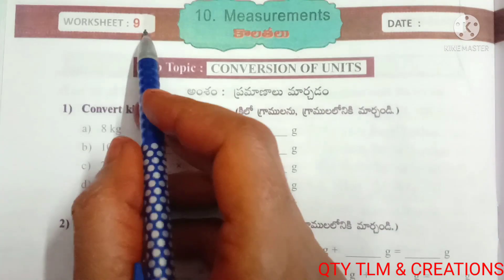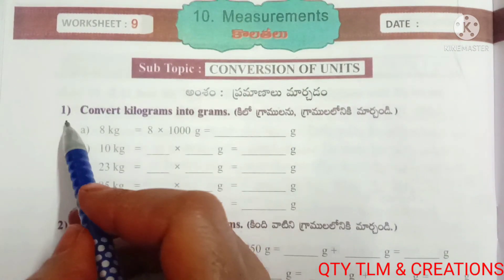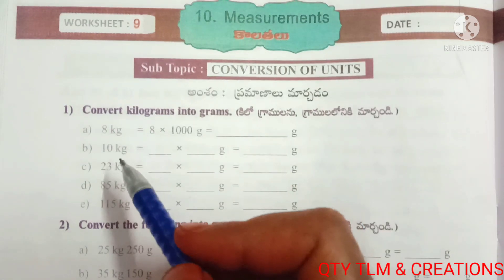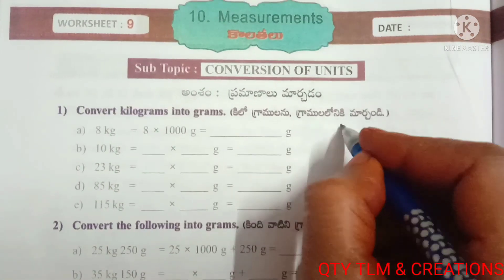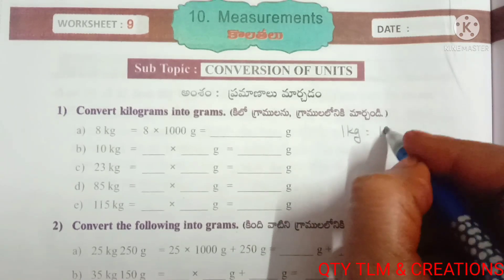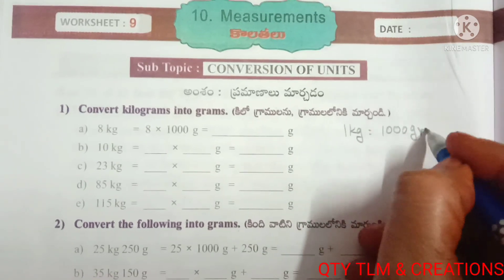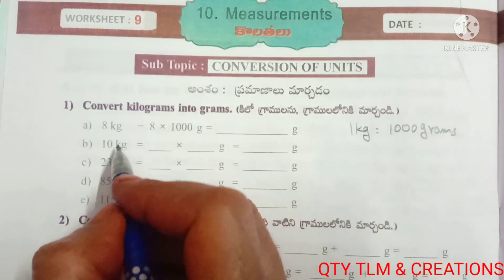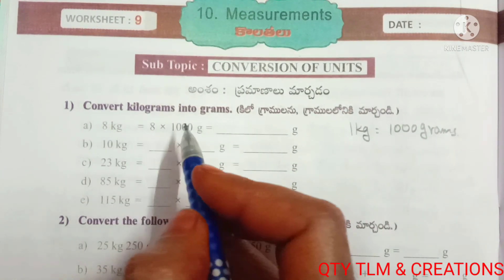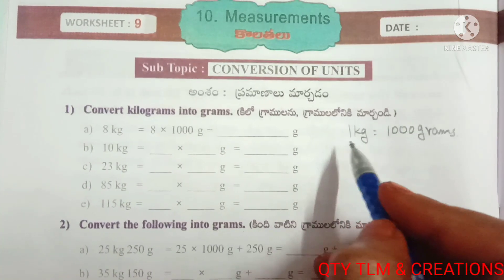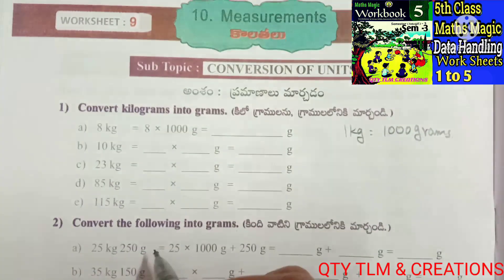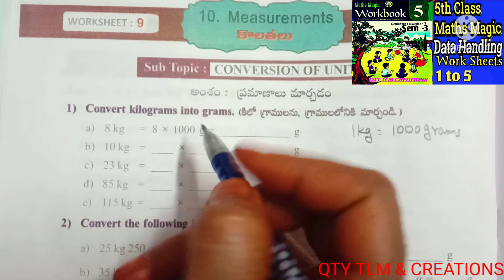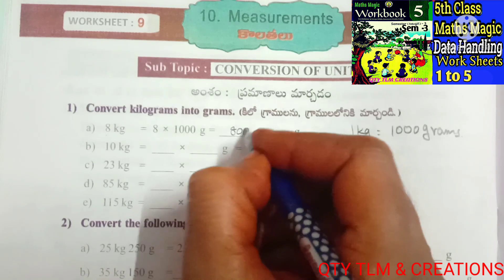Next, worksheet number 9, subtopic: conversion of units. First question: convert kilograms into grams. We have to remember that 1 kilogram equals 1000 grams, and 1000 grams equals 1 kilogram. To convert kilograms into grams, we multiply by 1000. So: (a) 8 kilograms equals 8 × 1000 grams, that equals 8000 grams.